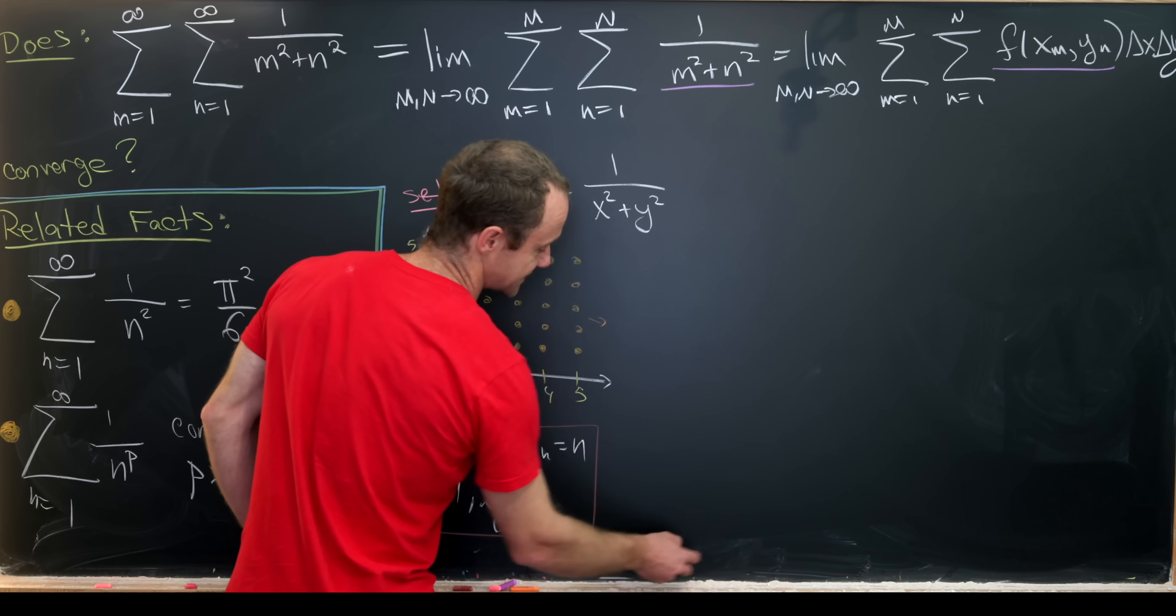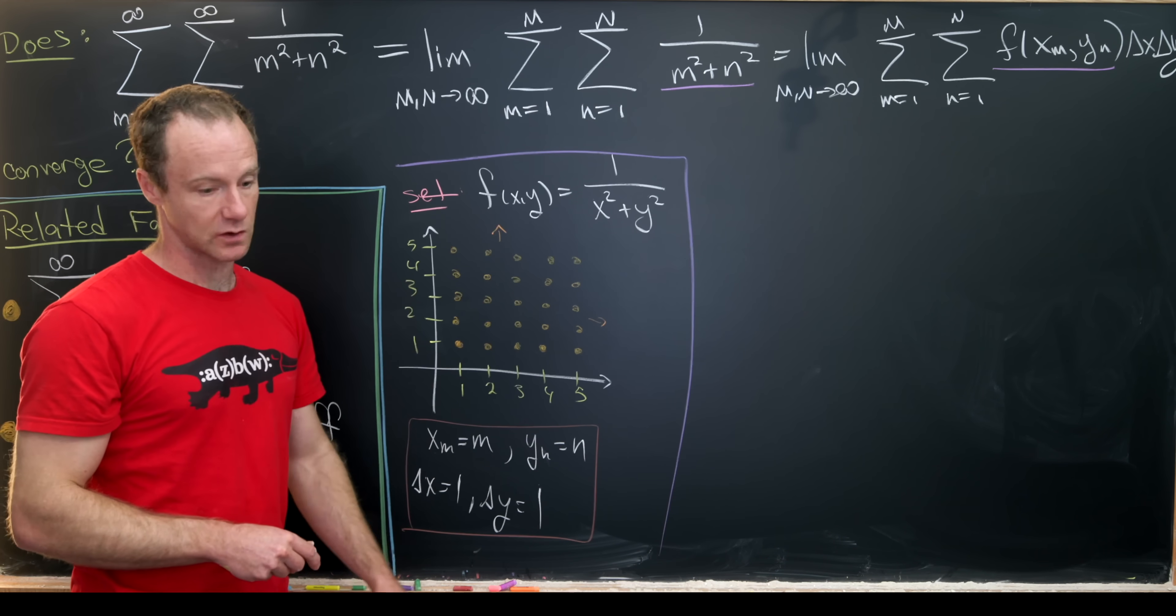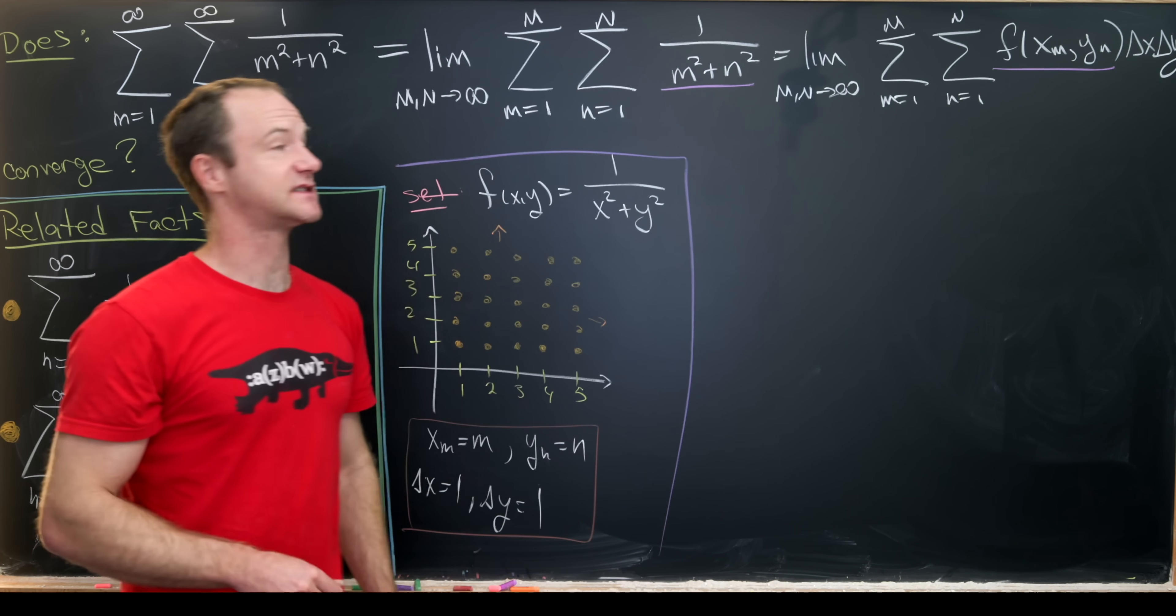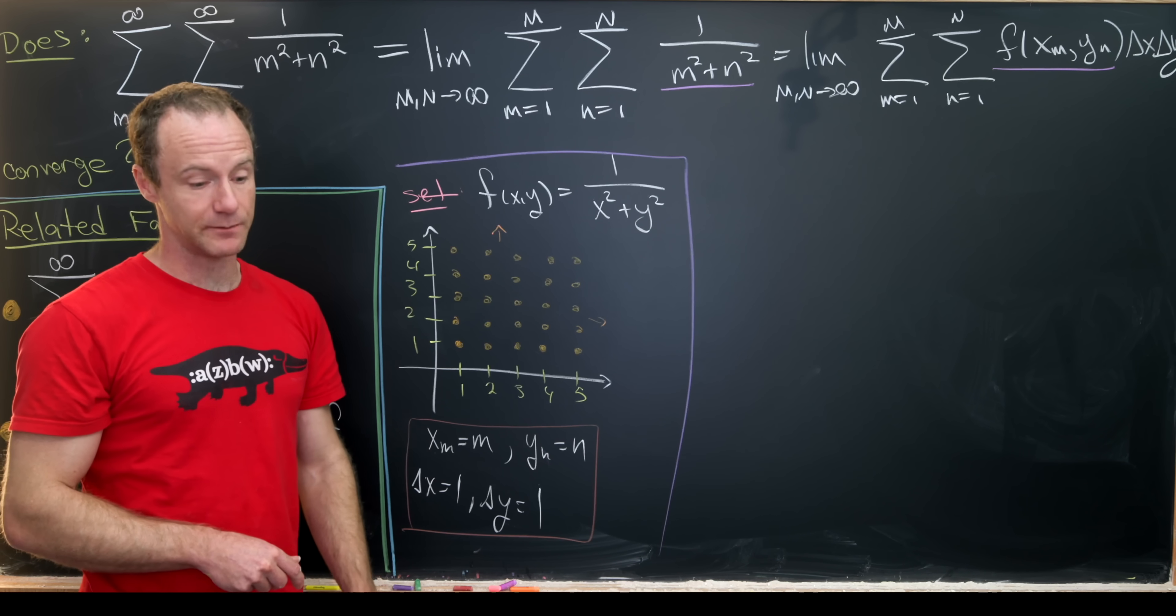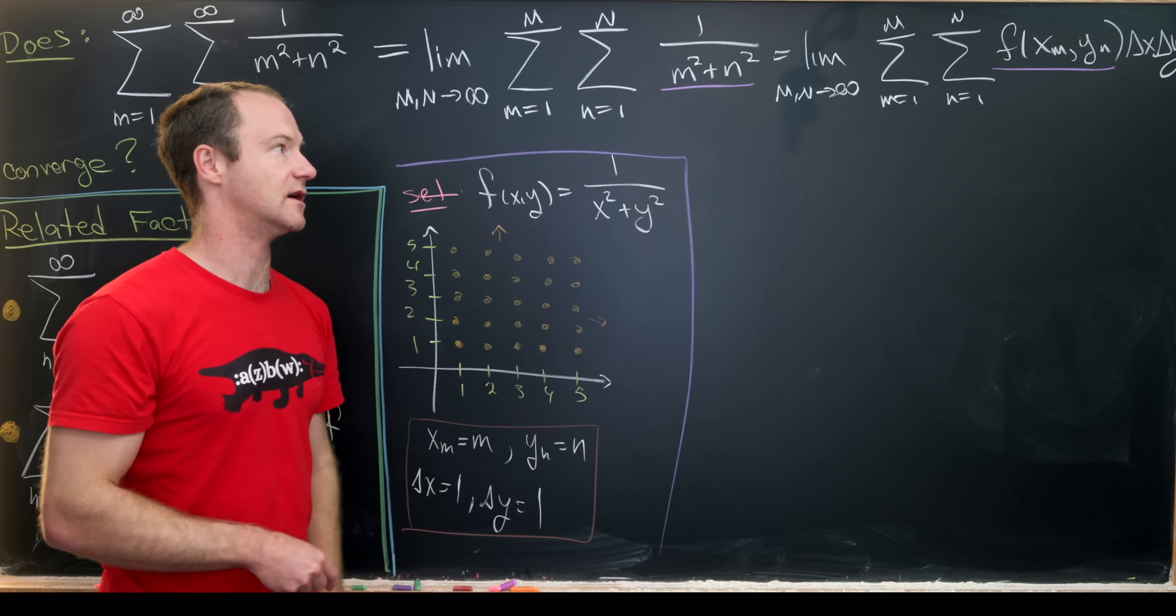So since the value of this function decreases as we radially go from the origin, we can replace this sum with an integral and pick up an inequality.